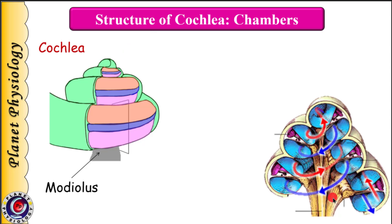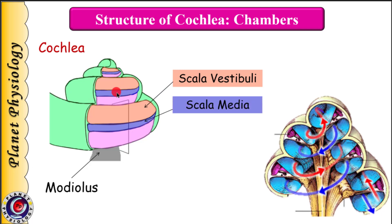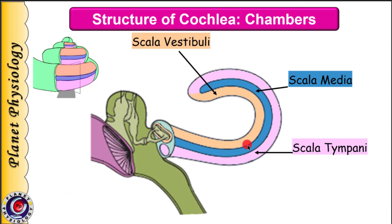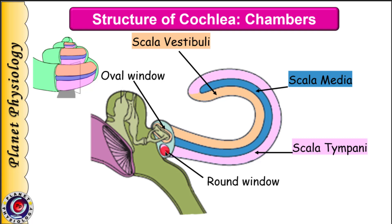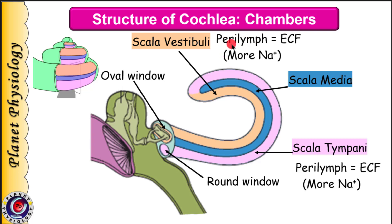Cochlea is divided into three chambers by two membranes. The outermost chamber is scala vestibuli, middle is scala media, and innermost is scala tympani. In this representation, cochlea is uncoiled to show scala vestibuli, media, and tympani. At the base of scala vestibuli is the oval window, which is closed by the footplate of the stapes. At the base of scala tympani is the round window, covered by the secondary tympanic membrane. Scala vestibuli and scala tympani are united at helicotrema, and both chambers contain fluid called perilymph.